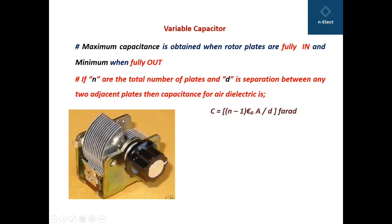If N is the total number of plates and D is the separation between any two adjacent plates, then for air dielectric — since there is nothing between the two adjacent plates — the capacitance is given as C = (N − 1) × ε₀ × A / D farads. We have already seen all these parameters and their importance in the previous videos.